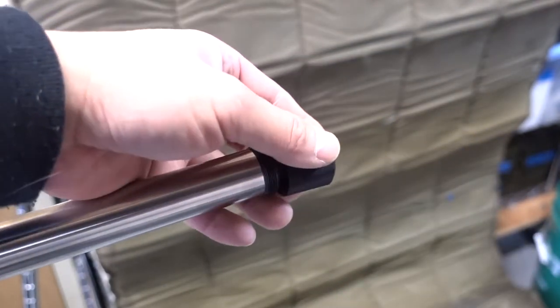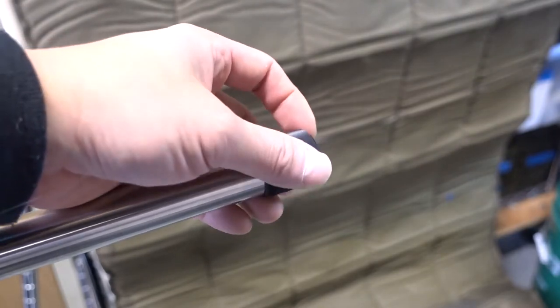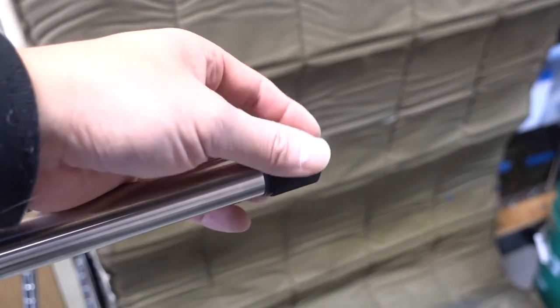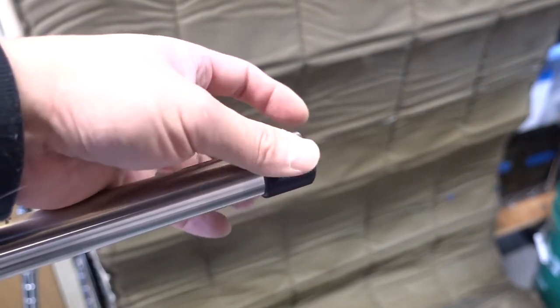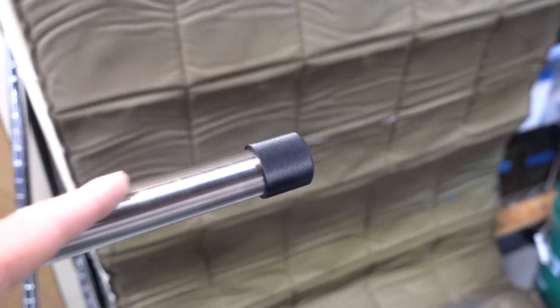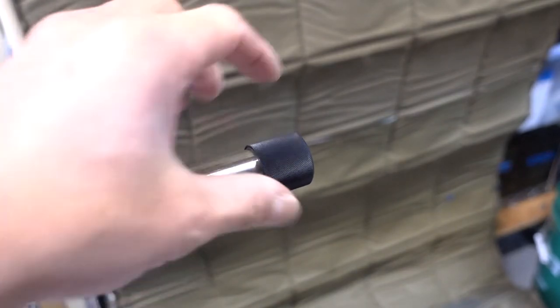So for example, yesterday, since I was just breaking in the barrel, and I'm going to do one shot clean five times, and then five shots clean five times, I didn't want to have the muzzle brake on there, so I was able to just put the thread protector on.